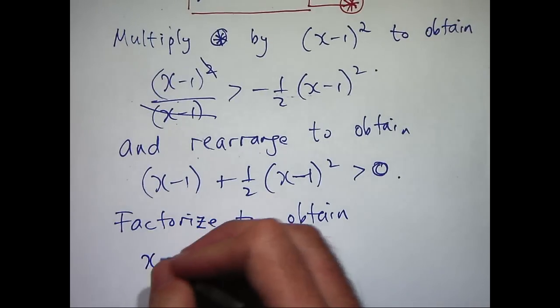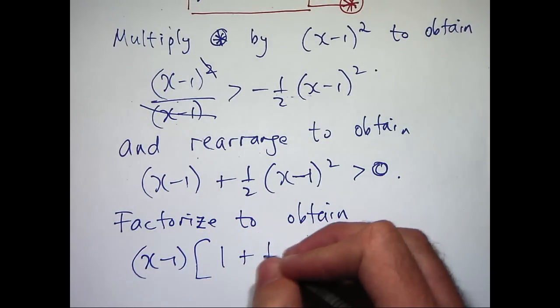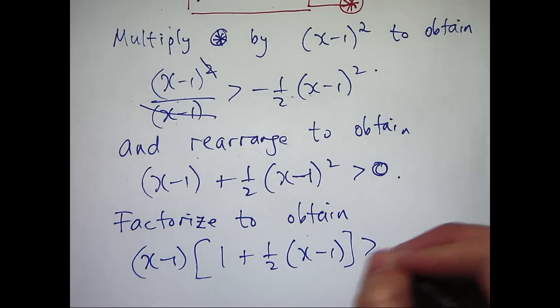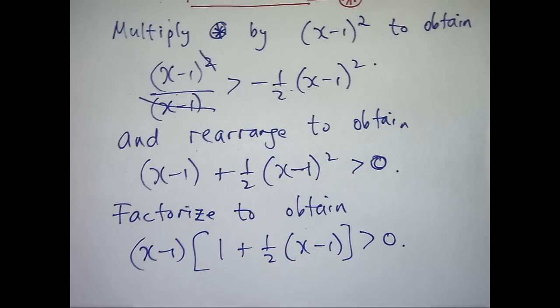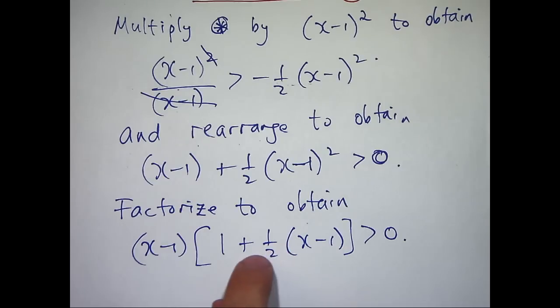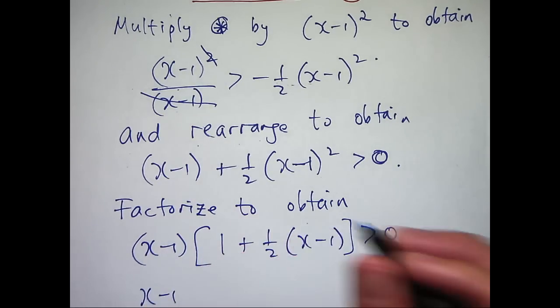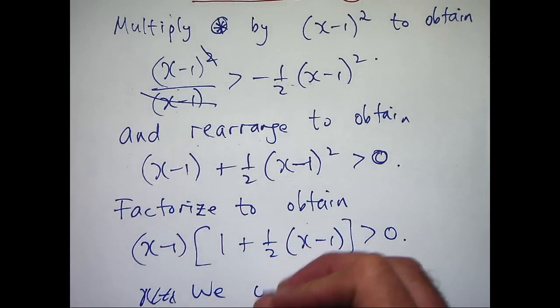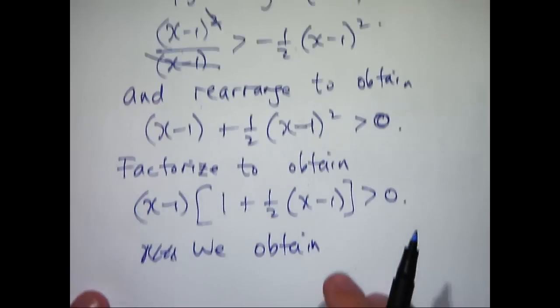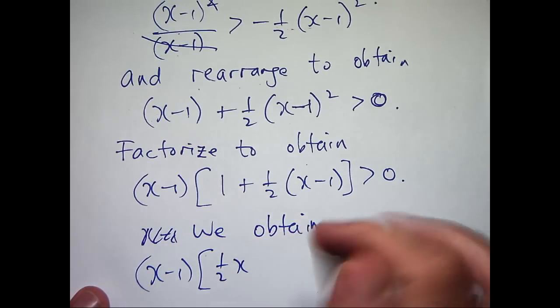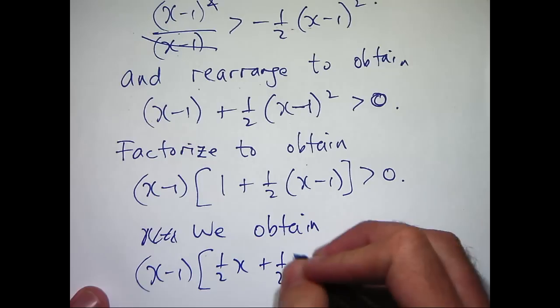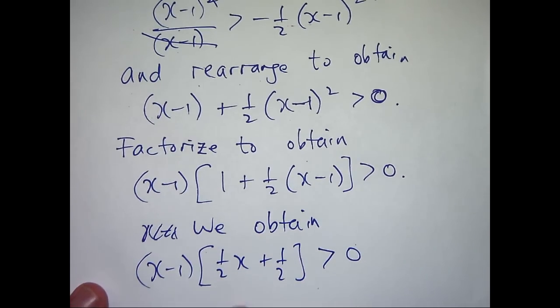So I'm going to bring a common factor of x minus 1 out the front and I'll get something like this. I can clean up what's in this bracket here just by expanding. I'm going to get a half, sorry, 1 plus 1 half x minus 1 half, which is the following. So I'm going to get a half x, 1 minus 1 half is plus 1 half. Again, we've got a common factor of a half, so I can take both those out.